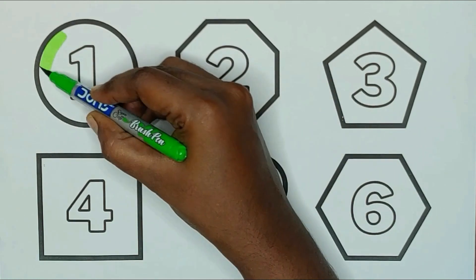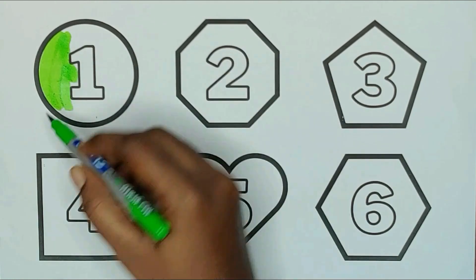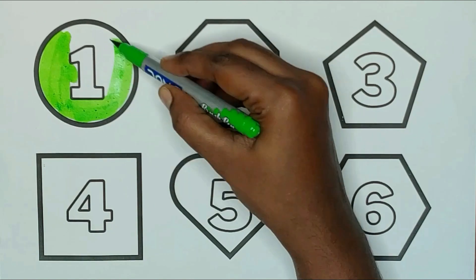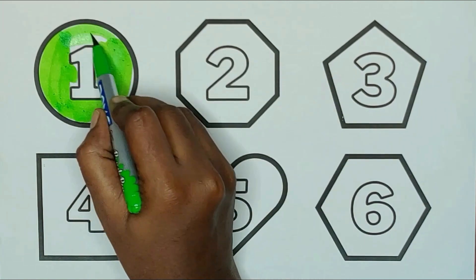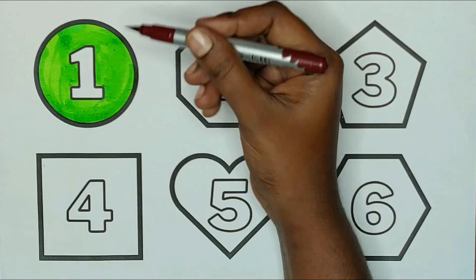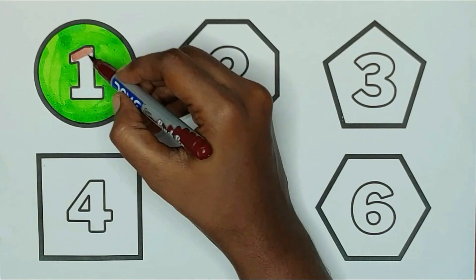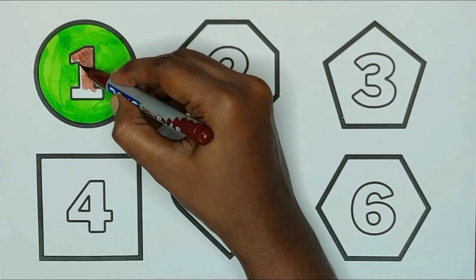Light green color circle. The shape is circle. Brown color, one. O, N, E, one.